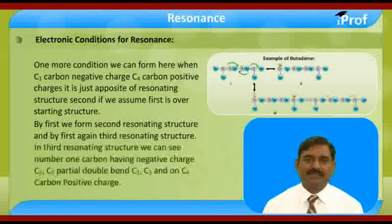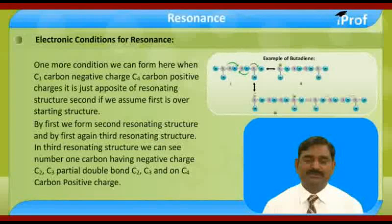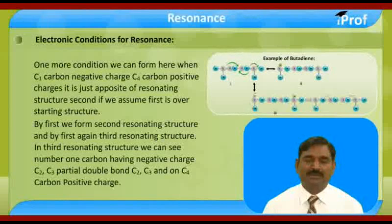In the third resonating structure we can see that carbon number one has a negative charge, C2-C3 has a double bond, and on C4 carbon there is a positive charge.